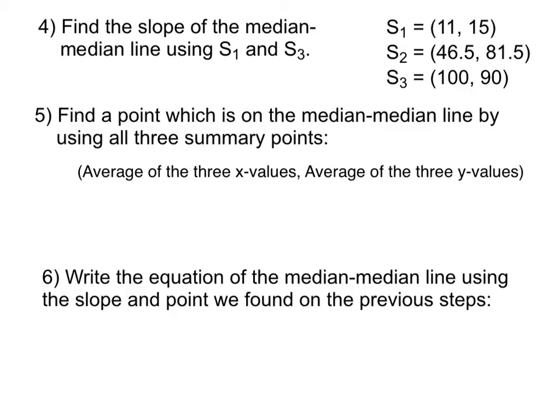We're going to be taking the first and the third summary points and using those to calculate the slope. So to get that slope, we will go 90 minus 15 all over 100 minus 11. That's equal to 75 over 89.